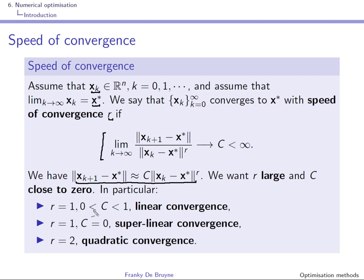If r = 1 with c < 1 we speak of linear convergence, but if c is close to one the convergence will be very slow. If r = 1 and c tends to zero, we have what is called super-linear convergence. If r = 2, convergence is faster and we speak of quadratic convergence. Higher speed of convergence typically means fewer iterations are needed.